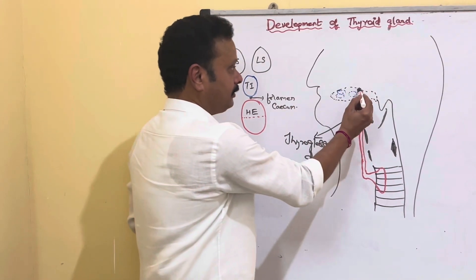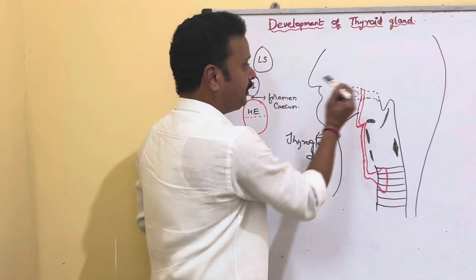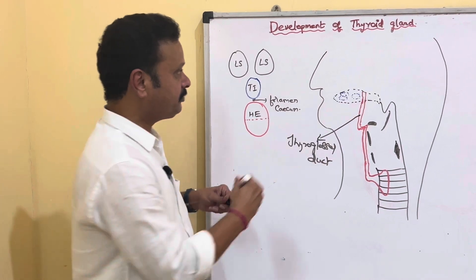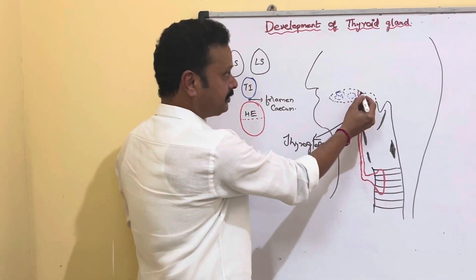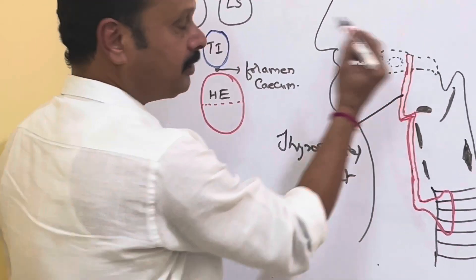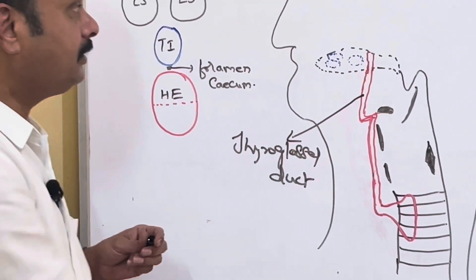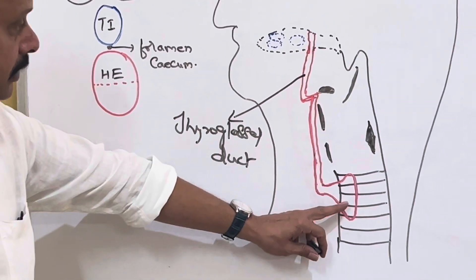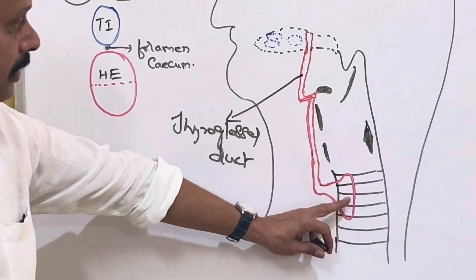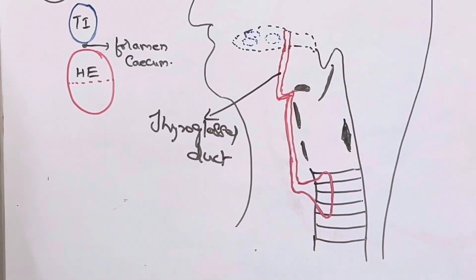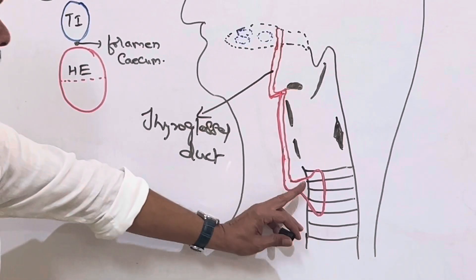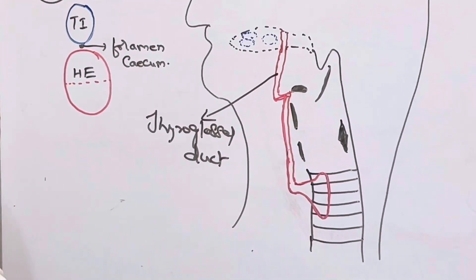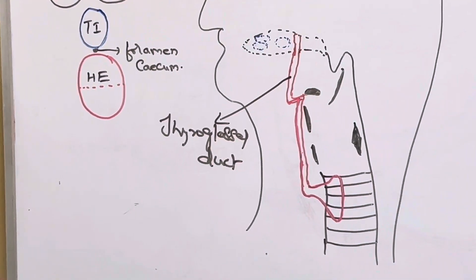To summarize: the thyroid gland develops from the thyroglossal duct, which begins within the substance of the tongue behind the tuberculum impar, descends downwards, and on reaching the upper part of the ventral aspect of the trachea, proliferates into two bilobed masses and the isthmus.